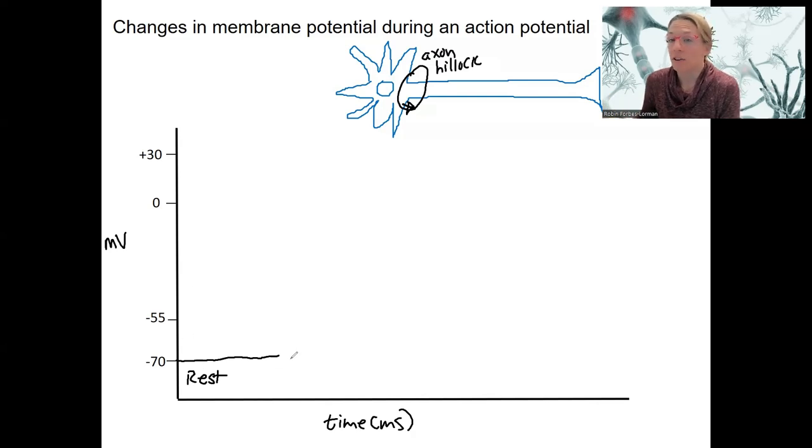You already know what it looks like to have depolarization occur. We drew this out in the previous video. Depolarization looks like this. We're getting less negative. So that's going to occur due to some sort of stimulus. So let's say stimulus is right there. It's going to cause depolarization. If that stimulus is large enough and depolarization is enough, enough means threshold.